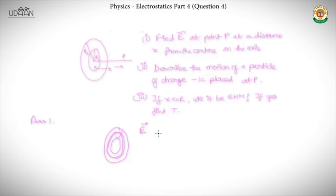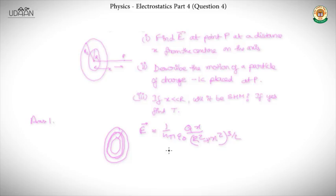From the previous question we solved, E is equal to 1 over 4 pi epsilon_0 times q·x divided by (r² + x²)^(3/2). Here q is the charge of the ring. To find q, we take a ring at distance r of outer radius r + dr.